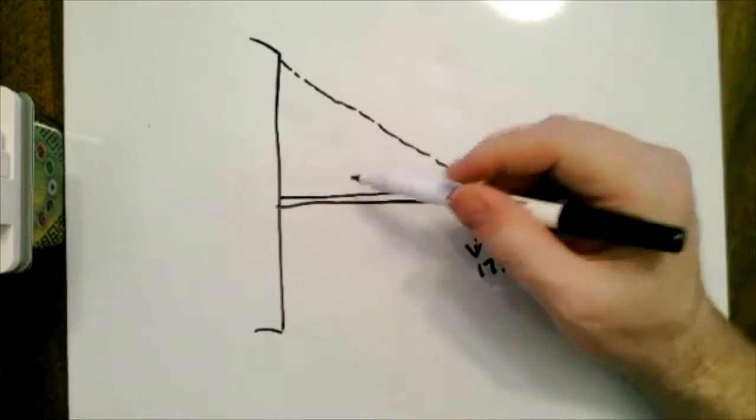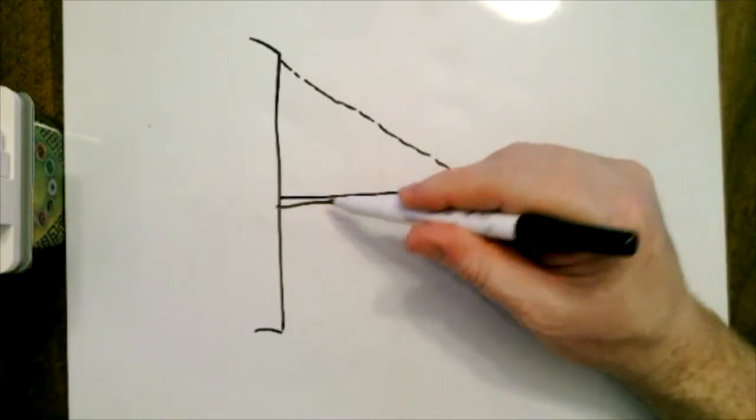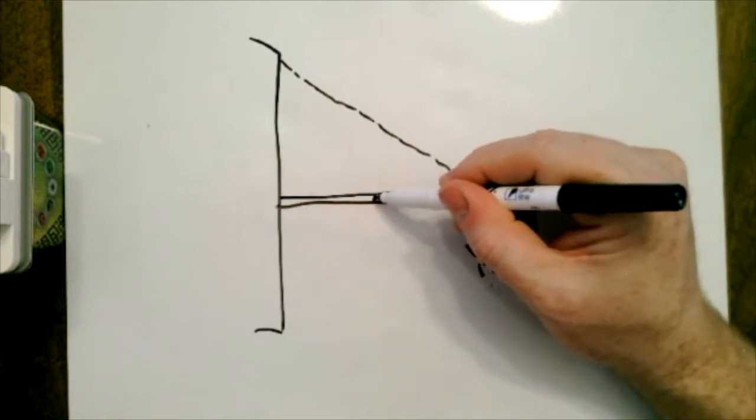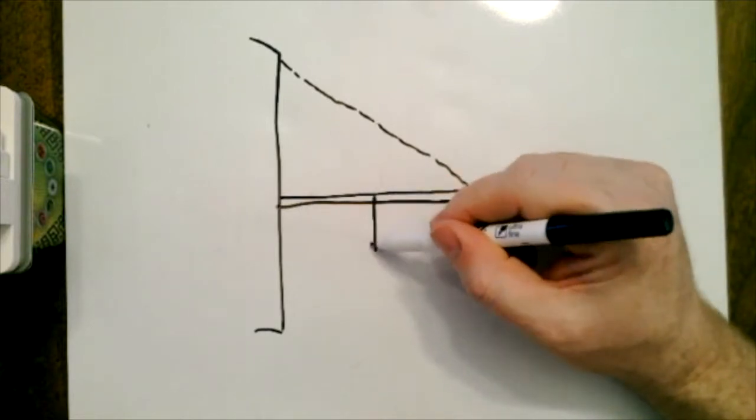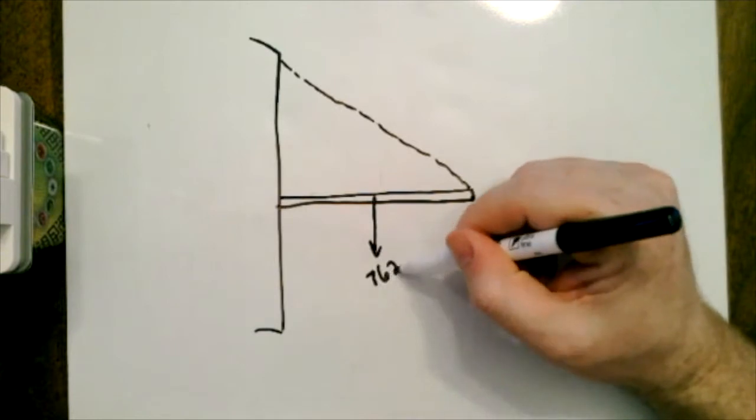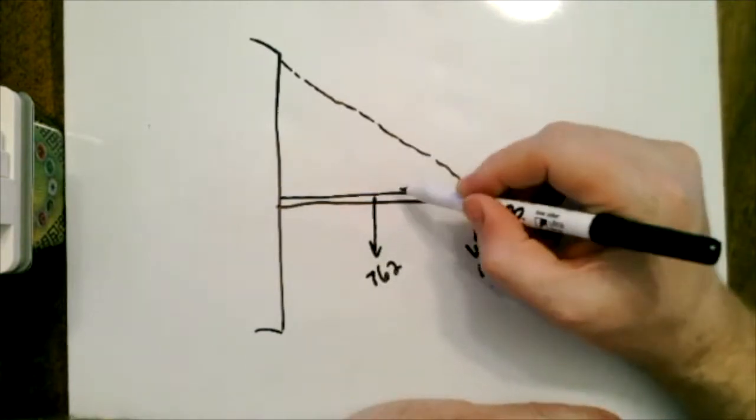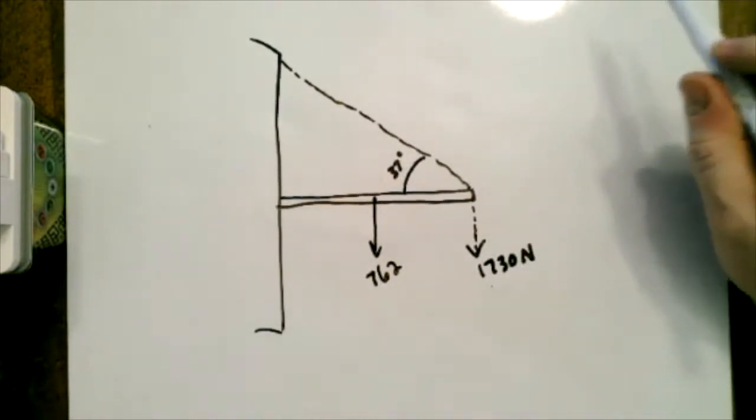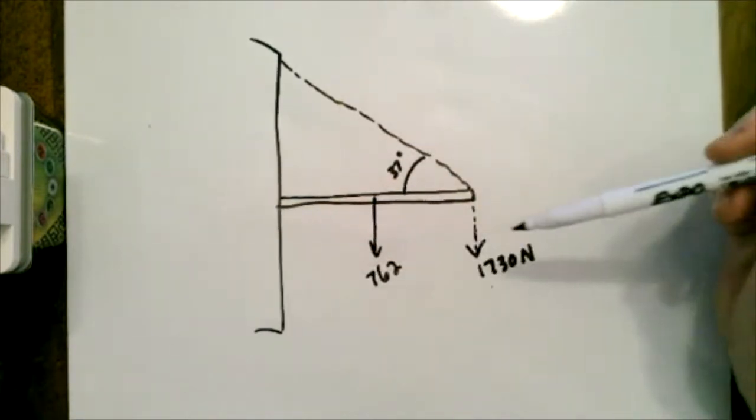Now the boom actually has some weight too, and it's a uniform mass, so we're going to put the boom weight right in the middle, and it happens to be 762 in this problem. This angle here is 37 degrees. Okay, so basically this whole thing's in static equilibrium.